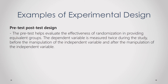The first example of experimental design is the pre-test post-test design. The pre-test helps evaluate the effectiveness of randomization in providing equivalent groups. The dependent variable is measured twice: before the manipulation of the independent variable and after the manipulation.